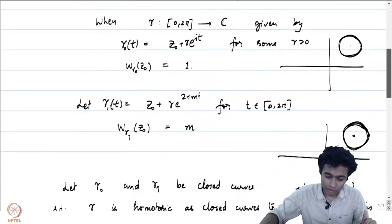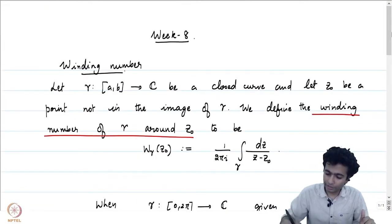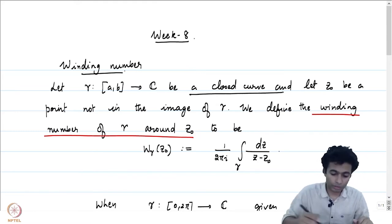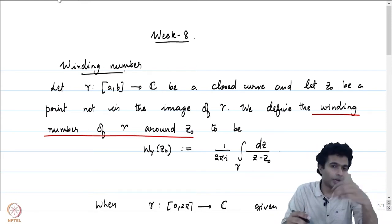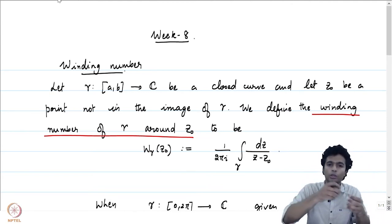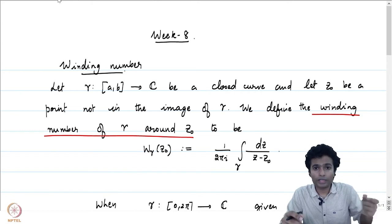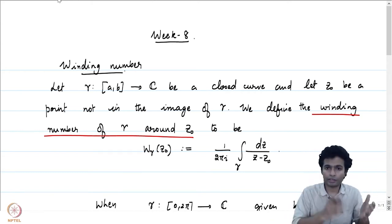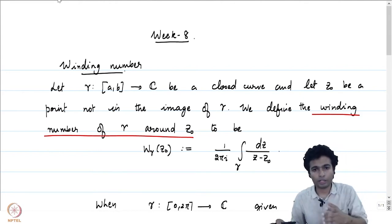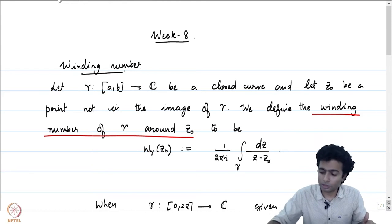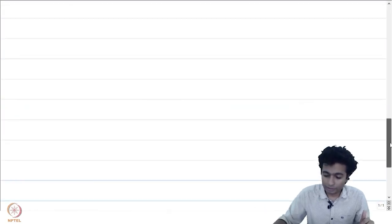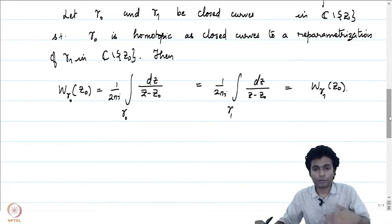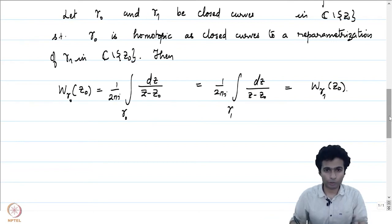The winding number is defined for arbitrary continuous closed curves. Recall that for the integral of a holomorphic function on an arbitrary closed curve, we obtain a polygonal path homotopic to the continuous curve and define the integral to equal the integral on that polygonal path, using Cauchy's theorem to confirm the definition is valid. Something similar will be done here: we freely move within the homotopy class and pick the most suitable curve to work with.